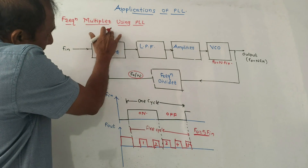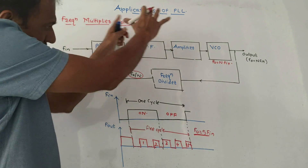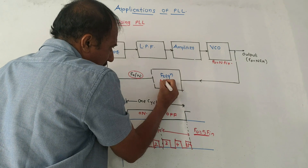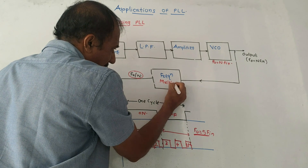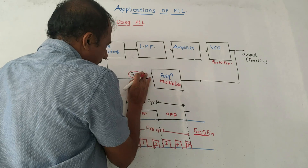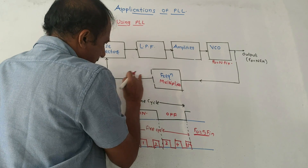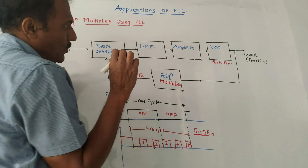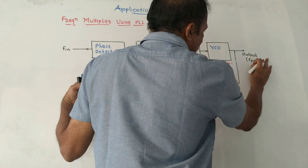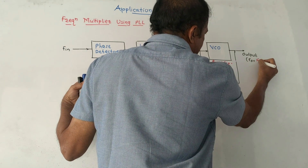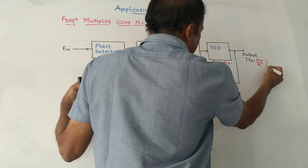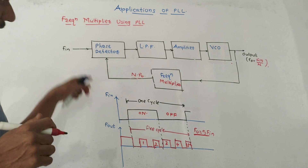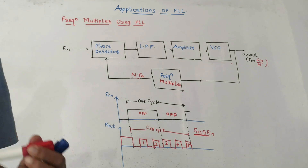Suppose we have to implement frequency division using PLL. The block diagram remains the same. Only this feedback block will be changed — it will be a frequency multiplier instead of a divider. The output of this block will be n times F0. So the value fed back to the phase detector will be Fn divided by N, giving frequency division at the output.